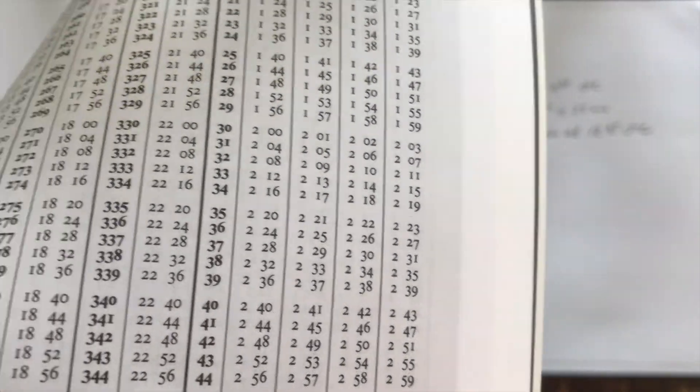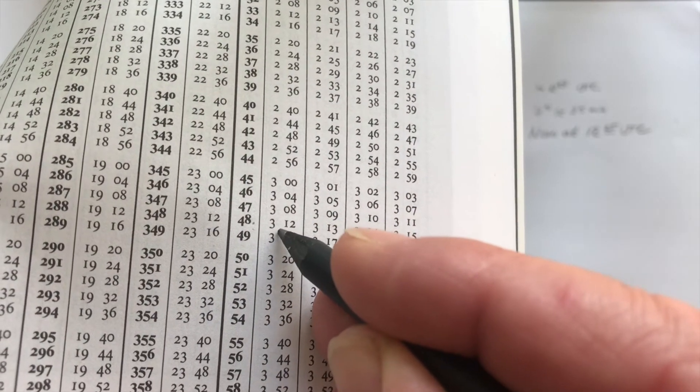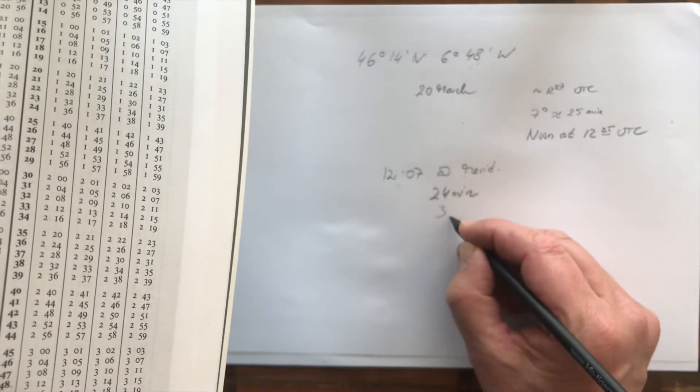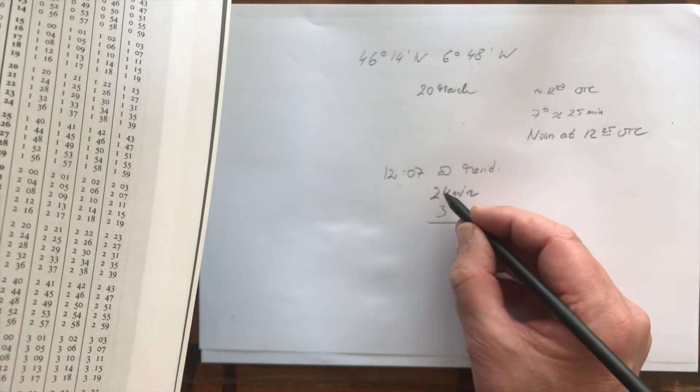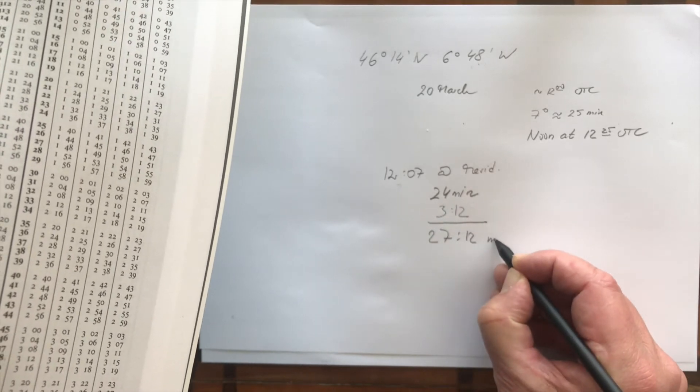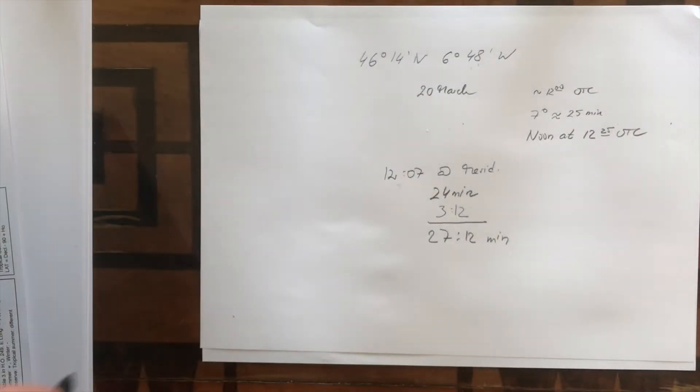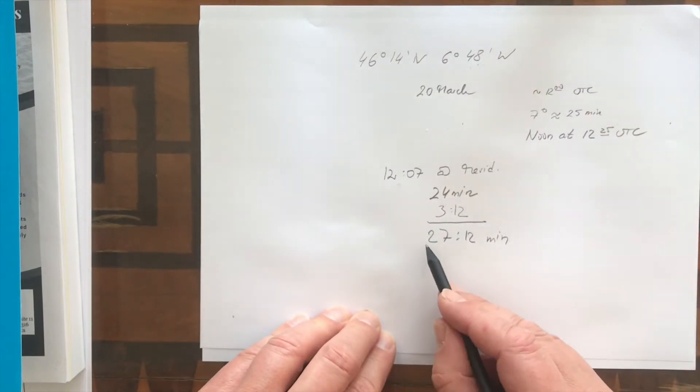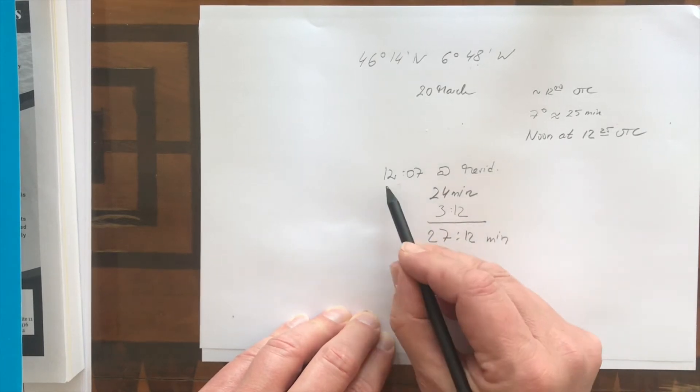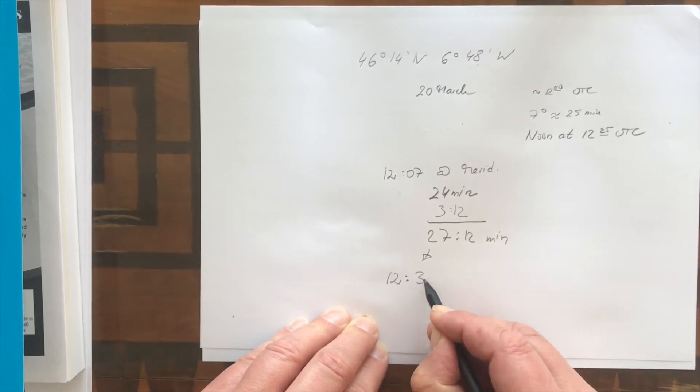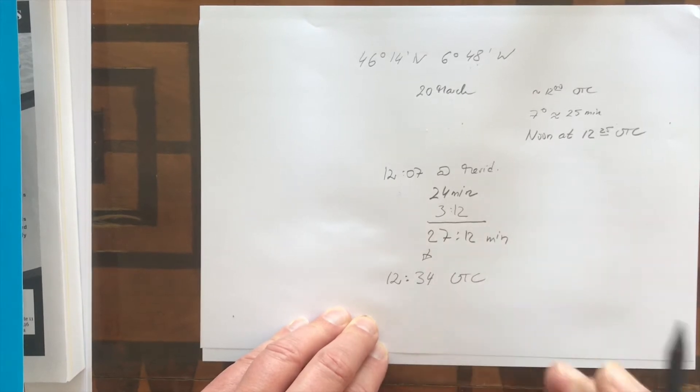It says here 48 minutes takes 3 minutes and 12 seconds. So precisely we will be 27 minutes and 12 seconds after 12:07. We have to add these 27 minutes plus 12:07. So the result is at 12 o'clock and 34 UTC. That's when we have noon.